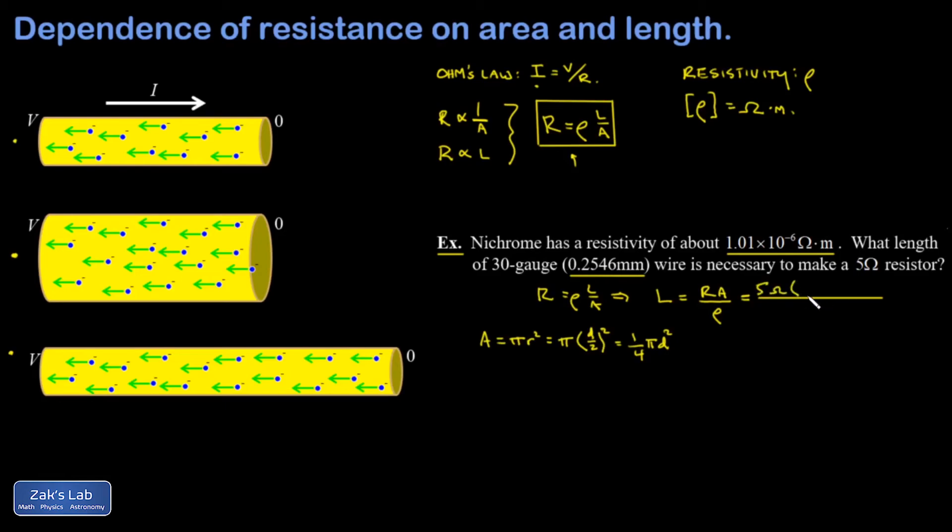Going back to my length calculation, the resistance I want is 5 ohms. The cross-sectional area is one quarter times pi times the diameter squared. To get this in meters I shift the decimal point three times: 0.0002546 squared. Then I plug in my resistivity 1.01 times 10 to the negative 6 ohm meters. The units of ohms cancel, one factor of meters cancels from the squared meters, and one survives, leaving me with meters for my final units.